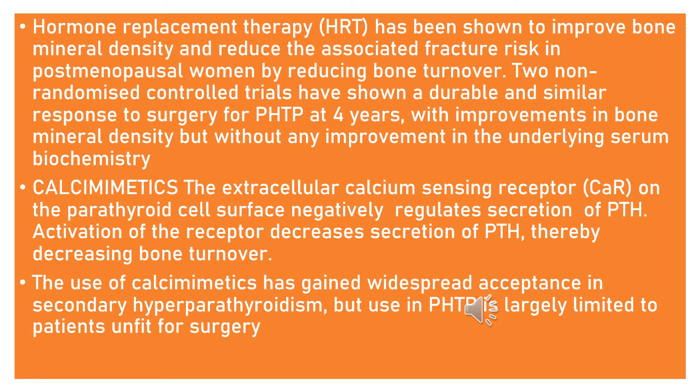Calcium mimetics work by activating the extracellular calcium-sensing receptor on the parathyroid cell surface, which negatively regulates secretion of parathyroid hormone. Activation of the receptor decreases secretion of parathyroid hormone, thereby decreasing bone turnover. The use of calcium mimetics has gained widespread acceptance in secondary hyperparathyroidism, but in primary hyperparathyroidism it is largely limited to patients unfit for surgery.